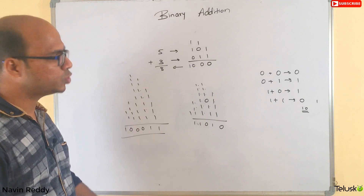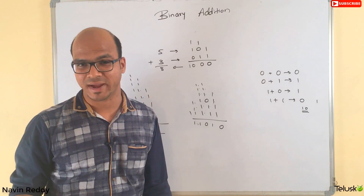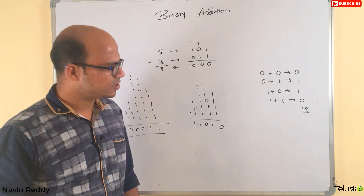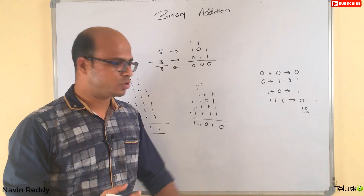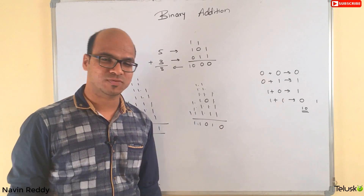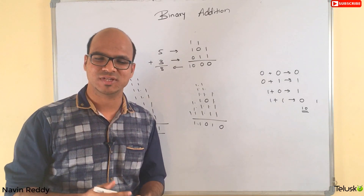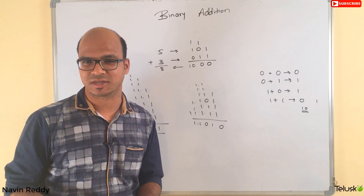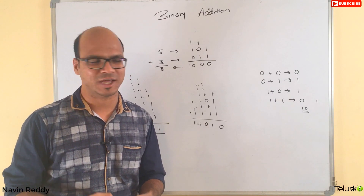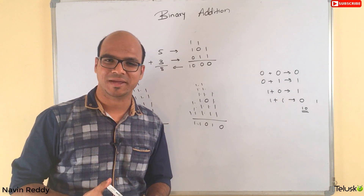That's how you can add numbers in binary format — it sounds simple once you know the rules. To understand why one plus one equals zero in binary, watch the video linked in the description. Thanks so much for watching!